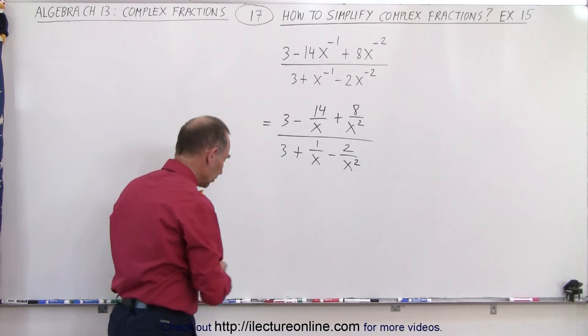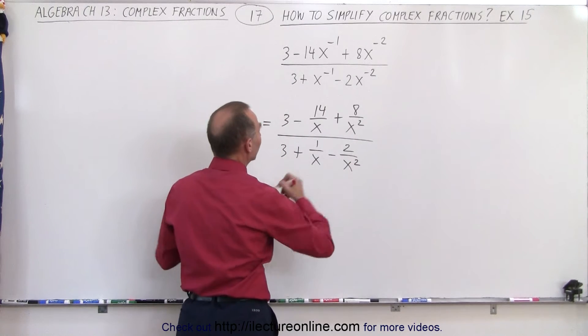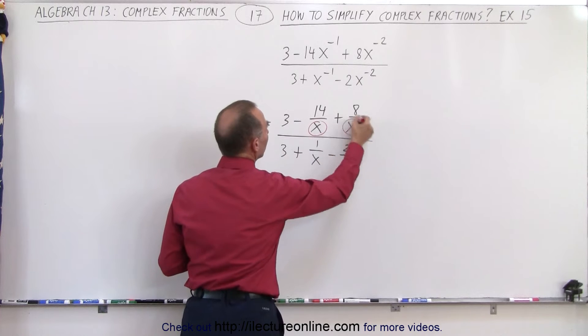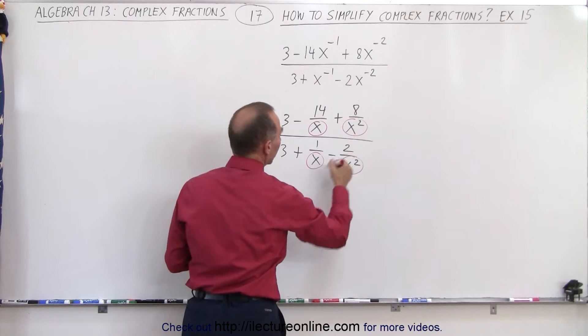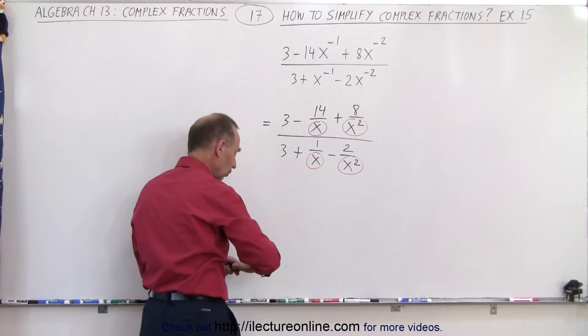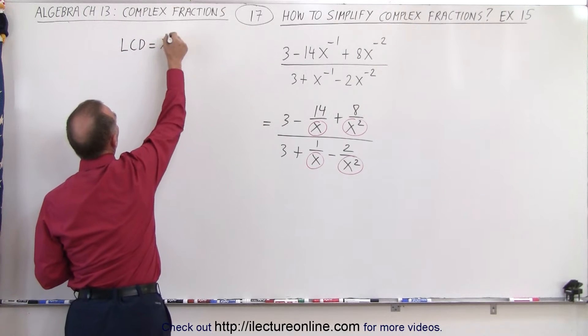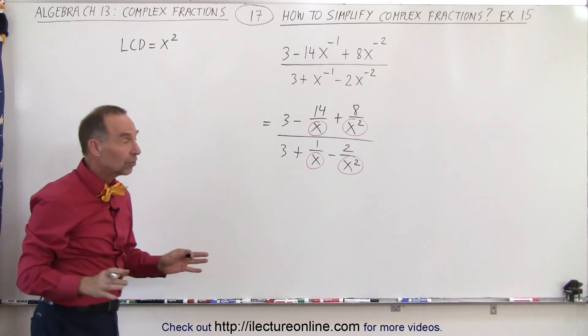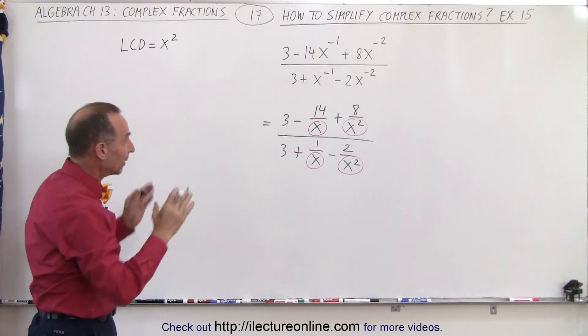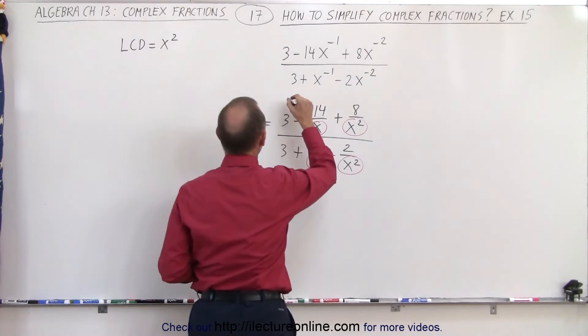Now we recognize where all the denominators are. We have an x here, we have an x squared, we have an x and an x squared. So you can see that the largest of the two denominators, x squared, is indeed the lowest common denominator. Now the method is multiply both the numerator and the denominator by the lowest common denominator.